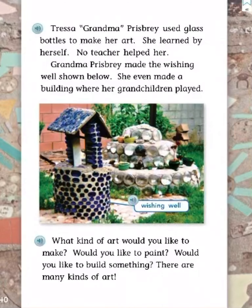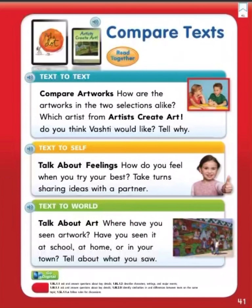What kind of art would you like to make? Would you like to paint? Would you like to build something? There are many kinds of art. Compare texts — text to text: compare artworks. How are the artworks in the two selections alike? Which artist from Artists Create Art do you think Vashet would like? Tell why. Text to self: talk about feelings. How do you feel when you try your best? Take turns sharing ideas with a partner. Text to world: talk about art. Where have you seen artwork? Have you seen it at school, at home, or in your town? Tell about what you saw.